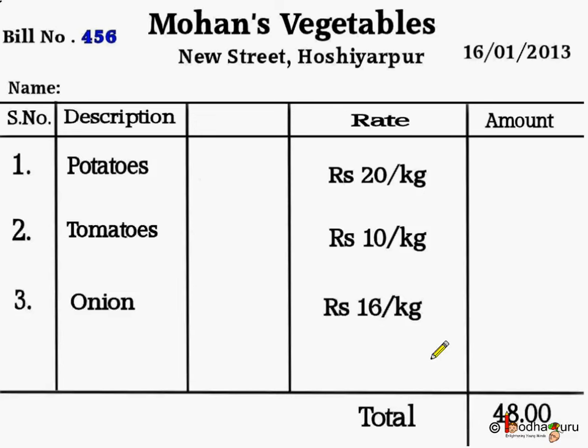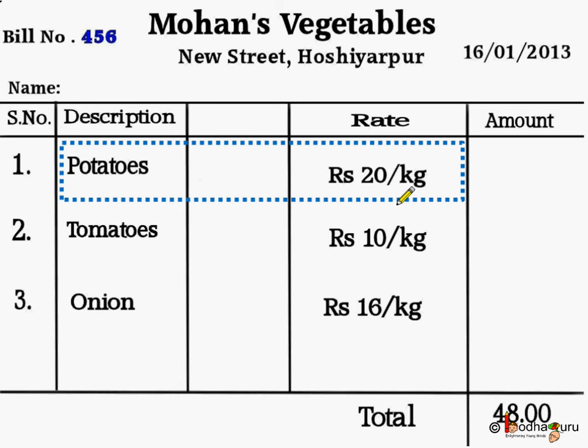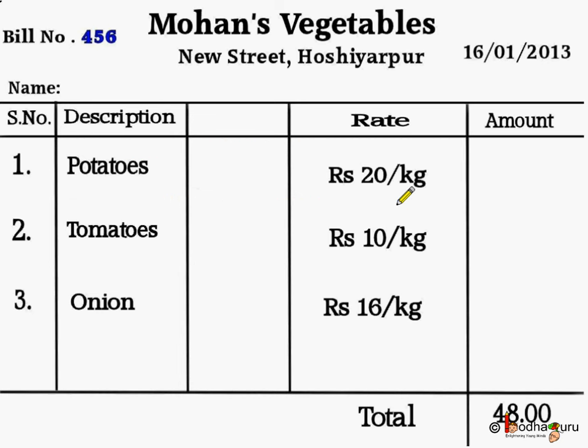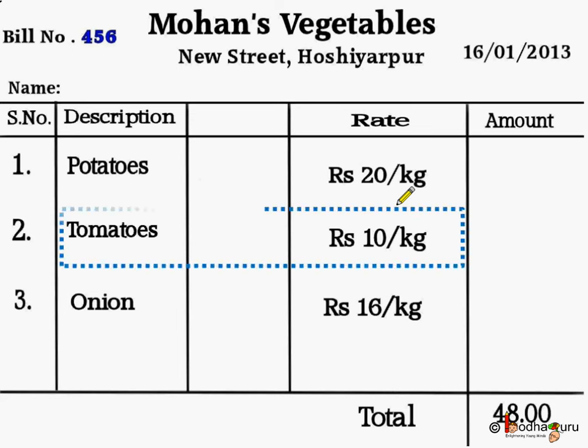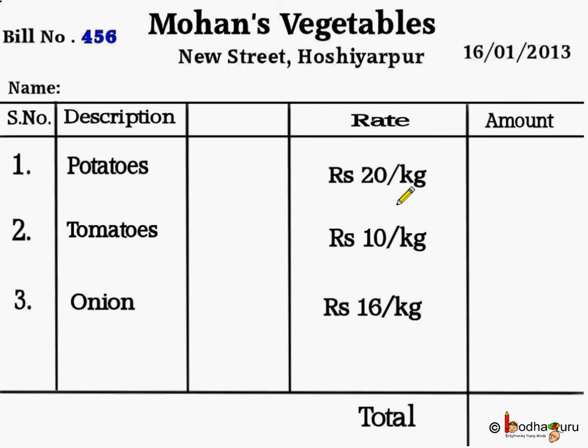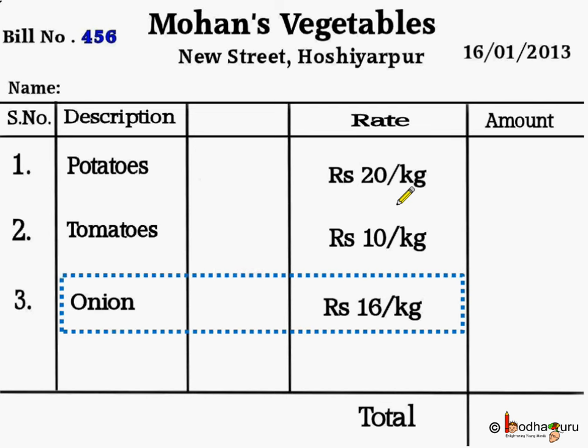What was the rate or price per unit for each item? The potatoes were sold at Rs. 20 per kg, tomatoes at Rs. 10 per kg, and onions at Rs. 16 per kg.